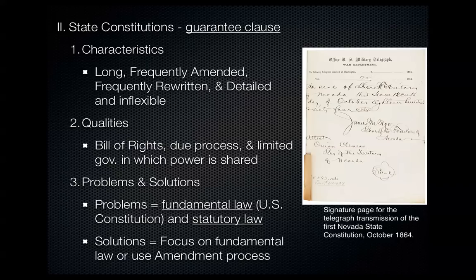Solutions: state constitutions should focus more on fundamental law and contain less detail. Some states choose to completely rewrite their constitution, while others use the amendment process to make changes. For example, Kansas has one of the shortest state constitutions at about 11,000 words. Kansans have revised their constitution through amendment rather than rewriting it completely, and Kansas can vote on up to five amendments at a time at a regularly scheduled general election or at special elections called by the state.